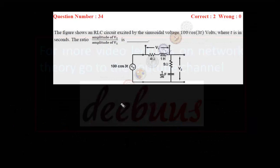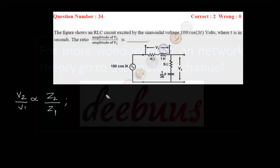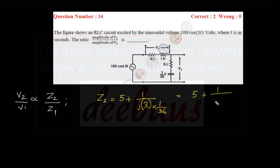Moving to the next question: the figure shows an RLC circuit excited by the sinusoidal voltage 100cos(3t), where t is in seconds. We have to calculate the amplitude ratio V2/V1, which is proportional to the ratio of impedances Z2/Z1. Z2 is the impedance of its arm: 5 ohm plus 1/(jωC). With ω=3 and C=1/36, this gives 5 + 1/(j·3·(1/36)) = 5 + 36/(j·3) = 5 − j12, marked as equation 1.